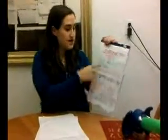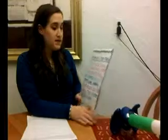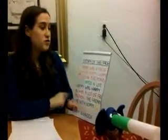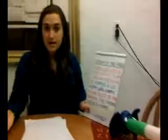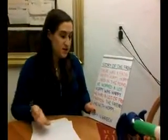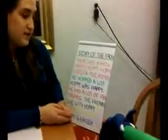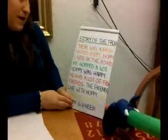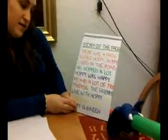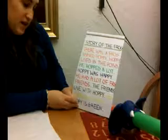Each of these represent a different child's idea of learning my ABCs. The next is a story. The children decide what topic they want to use. This topic is the frog. We have the story of the frog. The same color coordination goes into this with the children. There was a frog named Hoppy. Hoppy lived in the pond. He hopped a lot. Hoppy was happy. He had a lot of frog friends. The friends lived with Hoppy. He loved his mom. Hoppy is green.